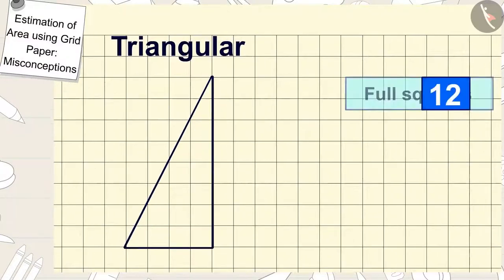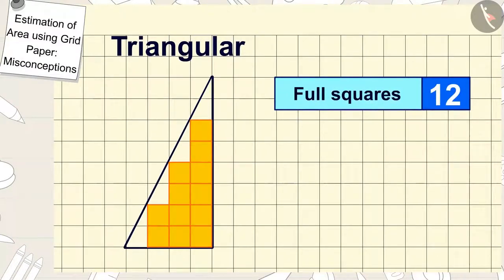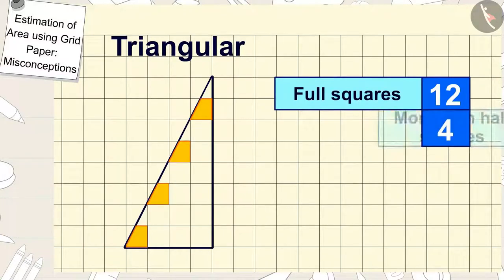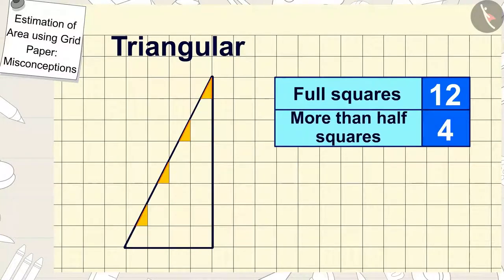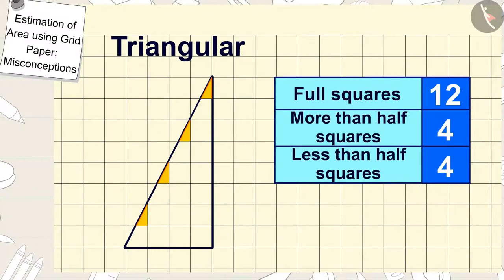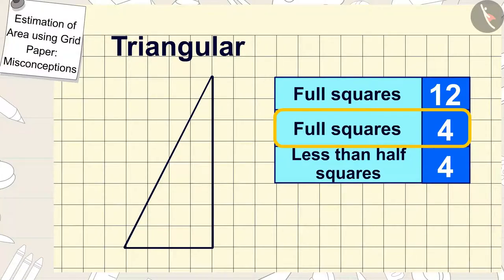There are twelve full squares in the area of the triangle shaped plate. There are four more than half squares and four less than half squares. So, we will count four more than half squares as four full squares.